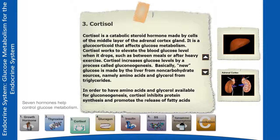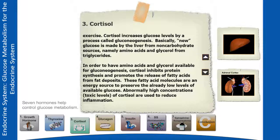Gluconeogenesis produces new glucose from non-carbohydrate sources, namely amino acids and glycerol from triglycerides. In order to have amino acids and glycerol available for gluconeogenesis, cortisol inhibits protein synthesis and promotes the release of fatty acids from fat deposits. These fatty acid molecules are an energy source to preserve the already low levels of available glucose. Abnormally high concentrations of cortisol are used to reduce inflammation.